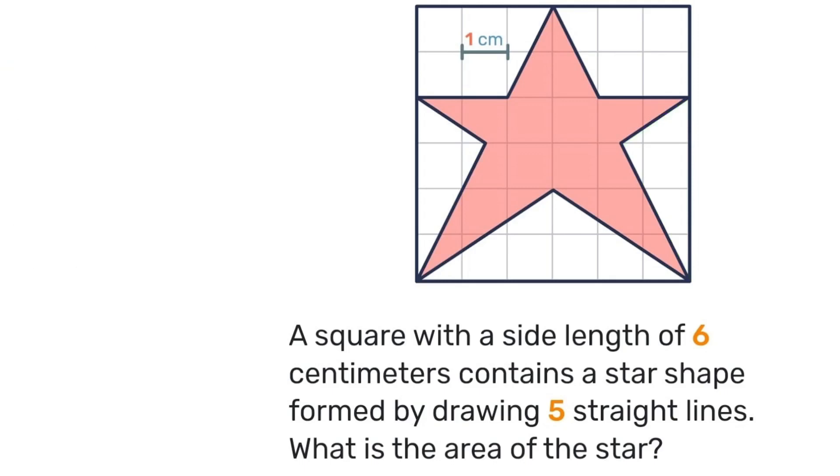Next that big triangle at the bottom. There is only one of them so it's just half base times height. Where the base is 6 and the height is 2. Half times 2 is 1. 1 times 6 gives us just 6.